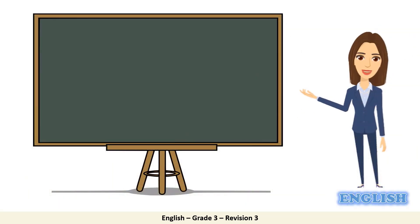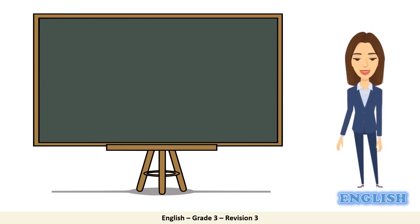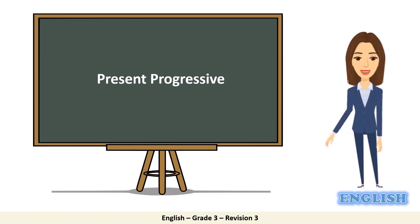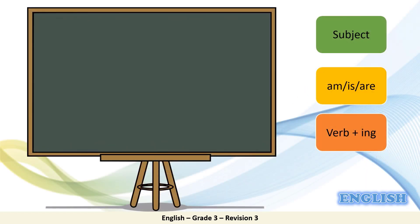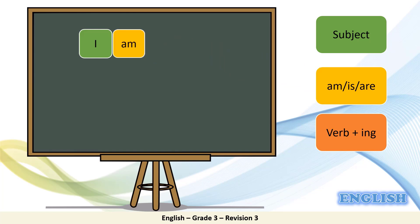So when do we use present progressive? We use it for talking or asking about actions happening now at the moment of speaking. How can we say a sentence talking about what's happening now? Wonderful. We start with the subject — for example, I — and then we need a helping 'to be' verb. What 'to be' verb comes with I? Very good. Am.